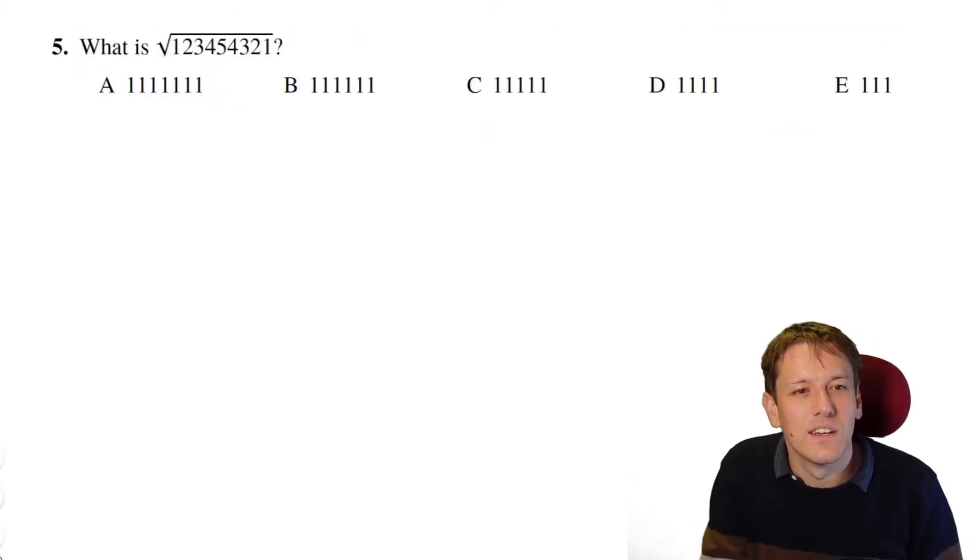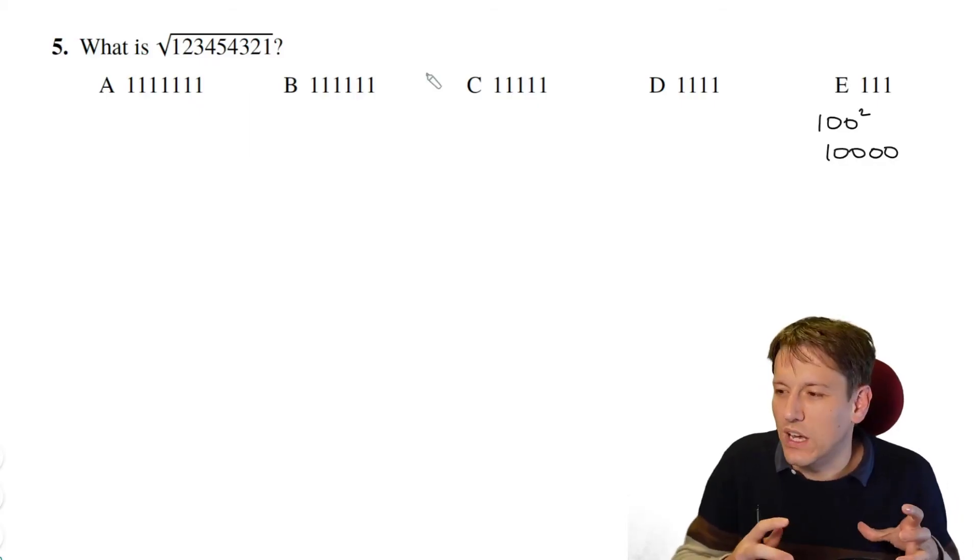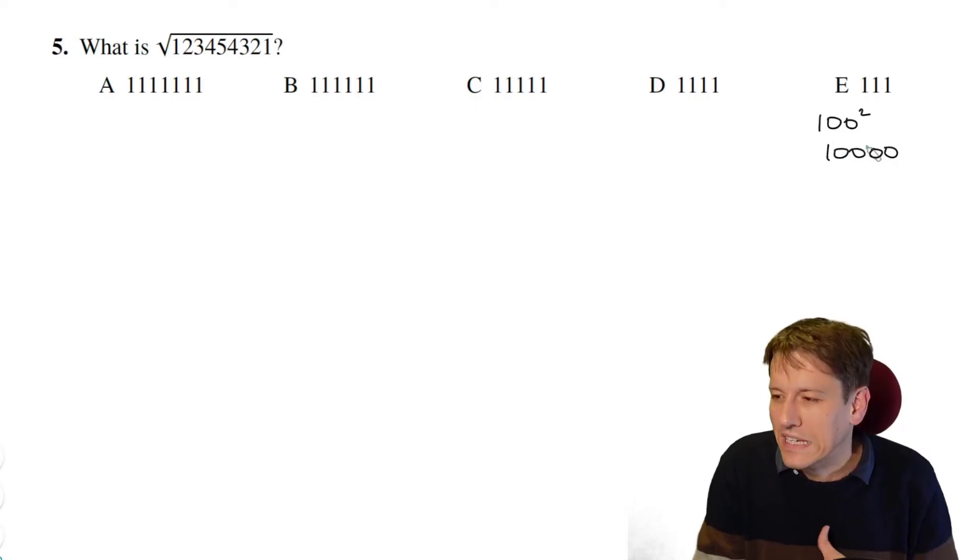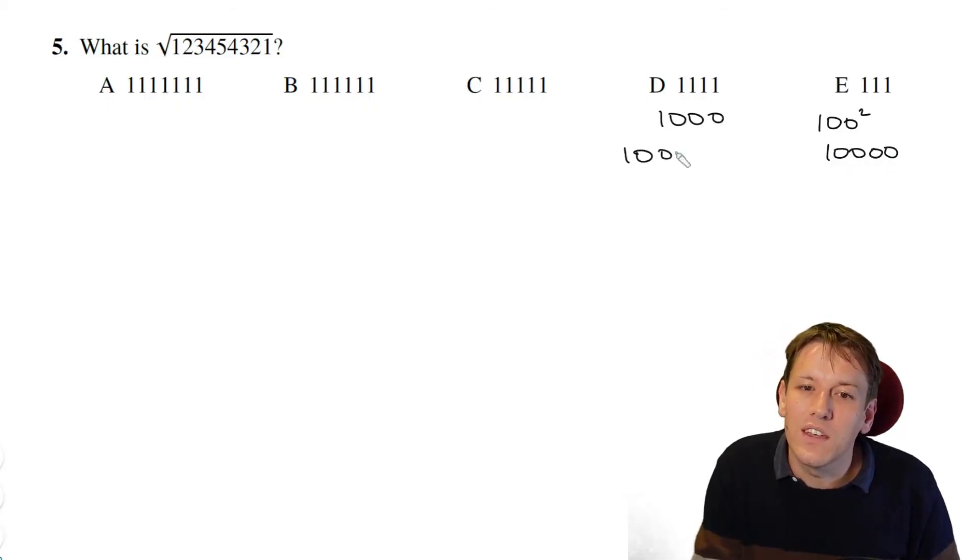So the idea here isn't to actually work out the square root of this number directly. We've got five options here, and we should be able to come up with a reasonable guess as to which one is right. Well, more than a guess, we'll deduce exactly which of these it is by just thinking about how many digits there are going to be. So if I took E, if I just did like 100 squared, that would be 100 with two more zeros, that would be 10,000. So that's obviously clearly far too small here. Now 111 squared would obviously be a bit bigger than this, but it's not going to be way bigger. It's probably going to give us something with this sort of pattern, but it's going to be that sort of size. So similarly, if I've got 1,000 here, that would give me something like 1 million.